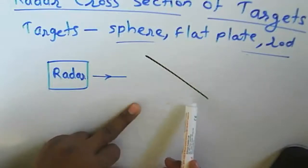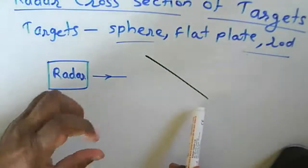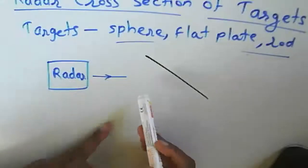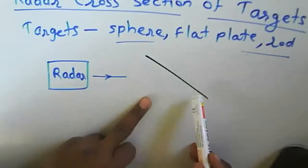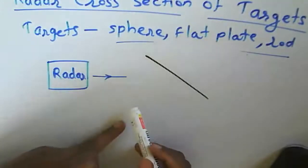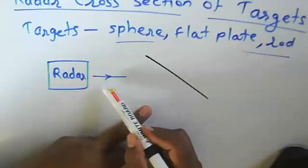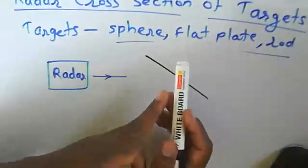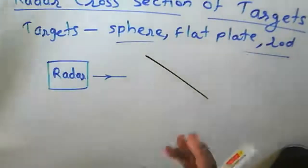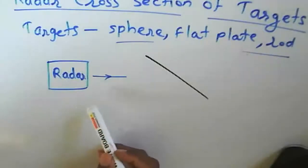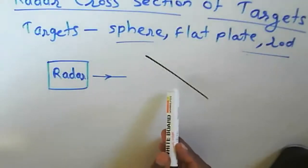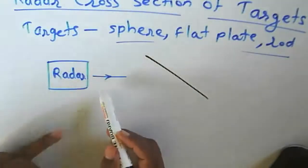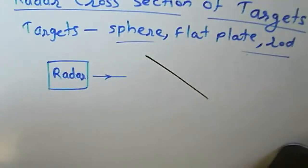If the wire or rod is a conducting material, the incident signal gets attenuated when it reaches the wire due to the wire's resistivity property. Because of this attenuation, the echo signal reflected back to the radar is reduced.